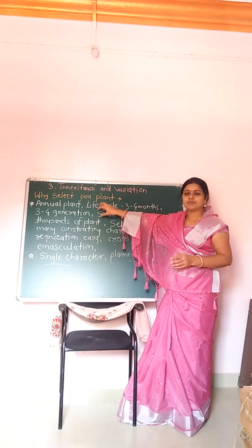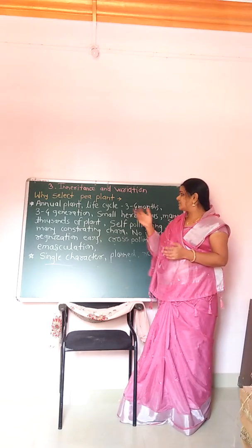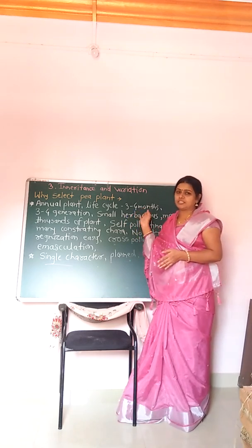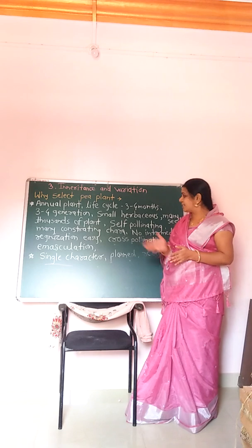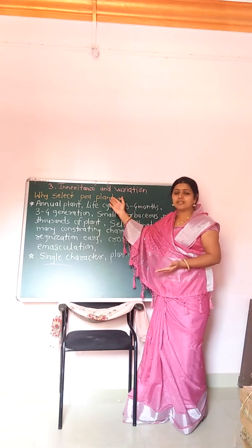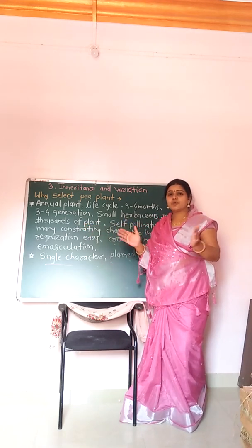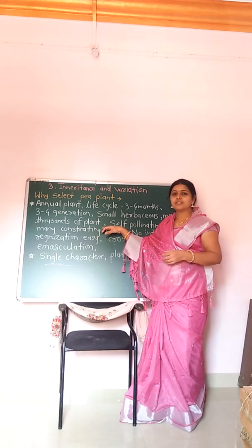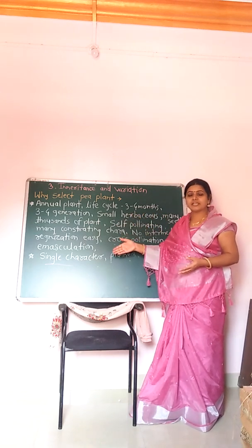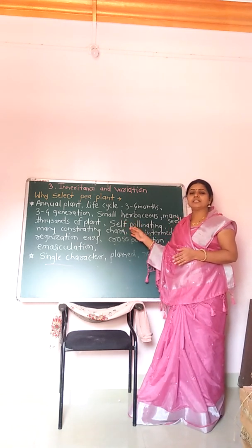The next reason is that the garden pea plant is a small herbaceous plant. It grows many seeds, and thousands of plants can be grown in a small plot.